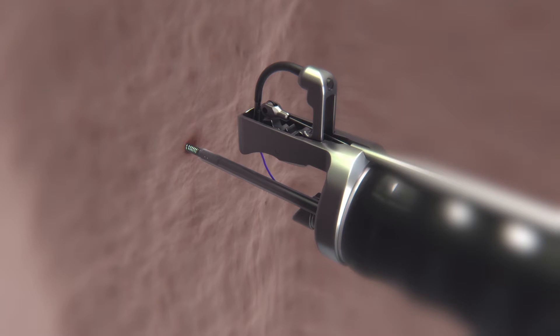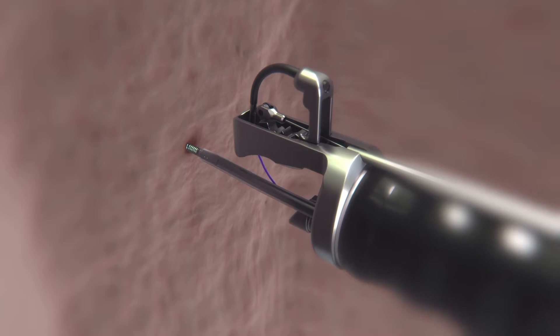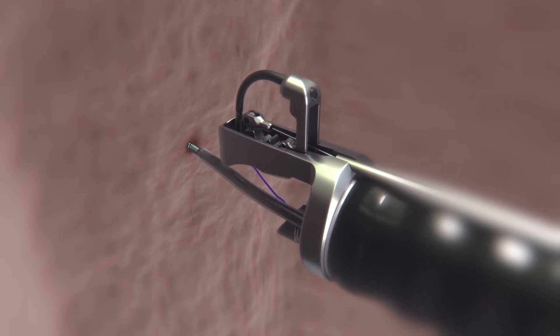To ensure a full thickness bite, maneuver the scope left so that the helix is right of the suturing tower. Pull the tissue until it reaches the scope.